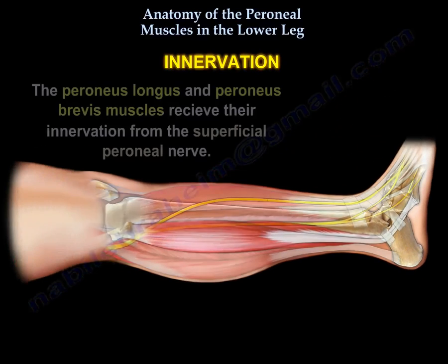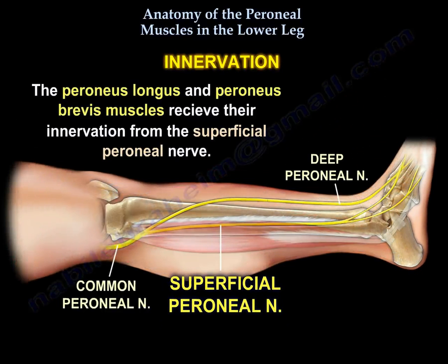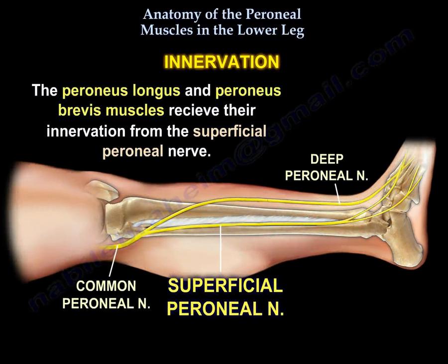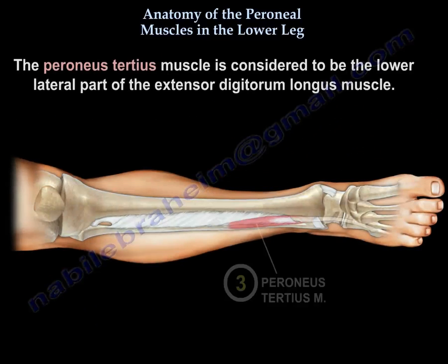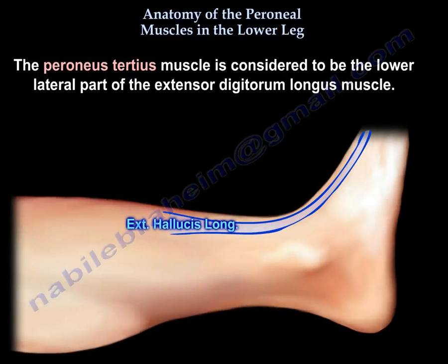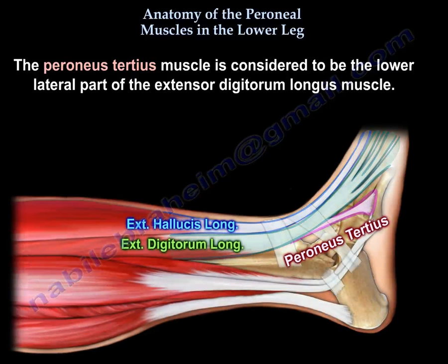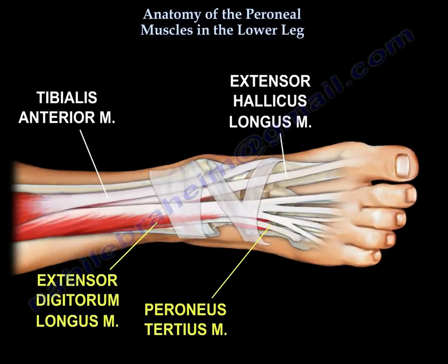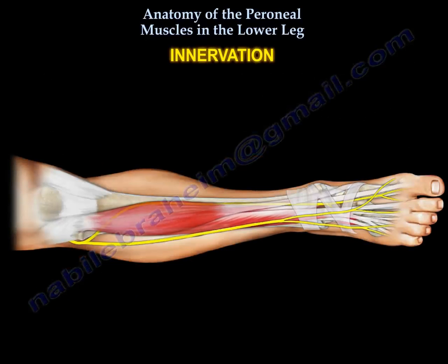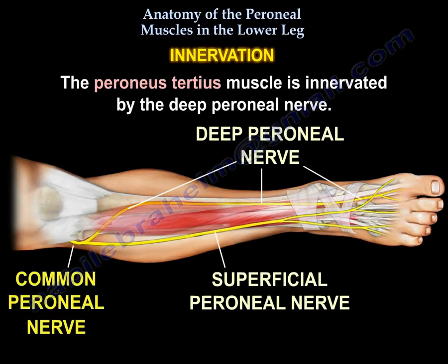The perineus longus and perineus brevis muscles receive their innervation from the superficial peroneal nerve. The perineus tertius muscle is considered to be the lower lateral part of the extensor digitorum longus muscle. Innervation: the perineus tertius muscle is innervated by the deep peroneal nerve.